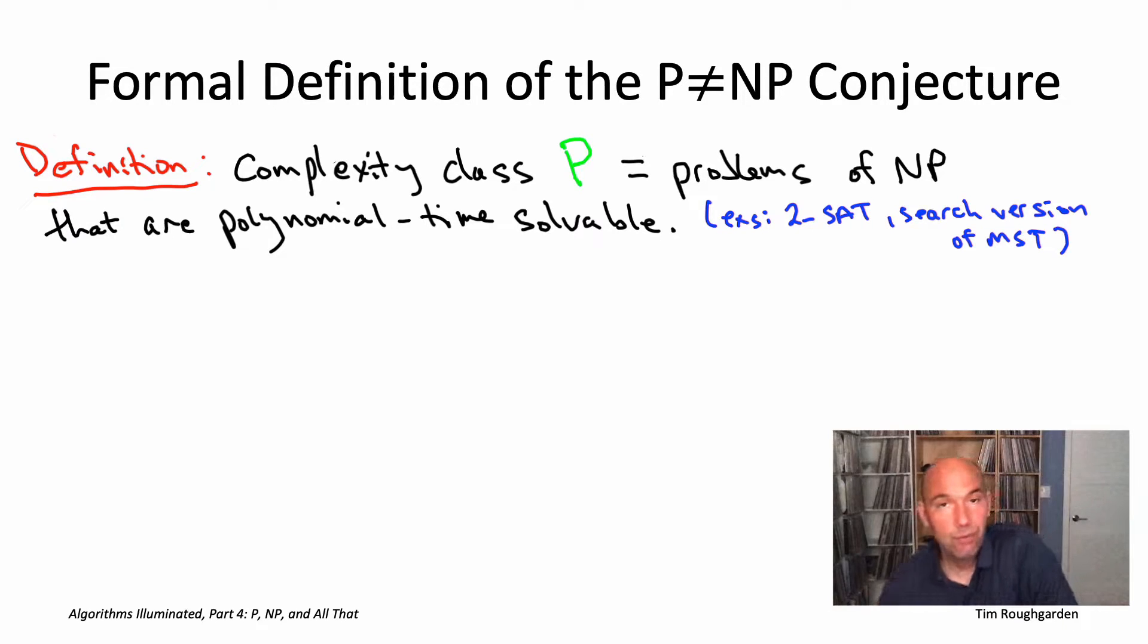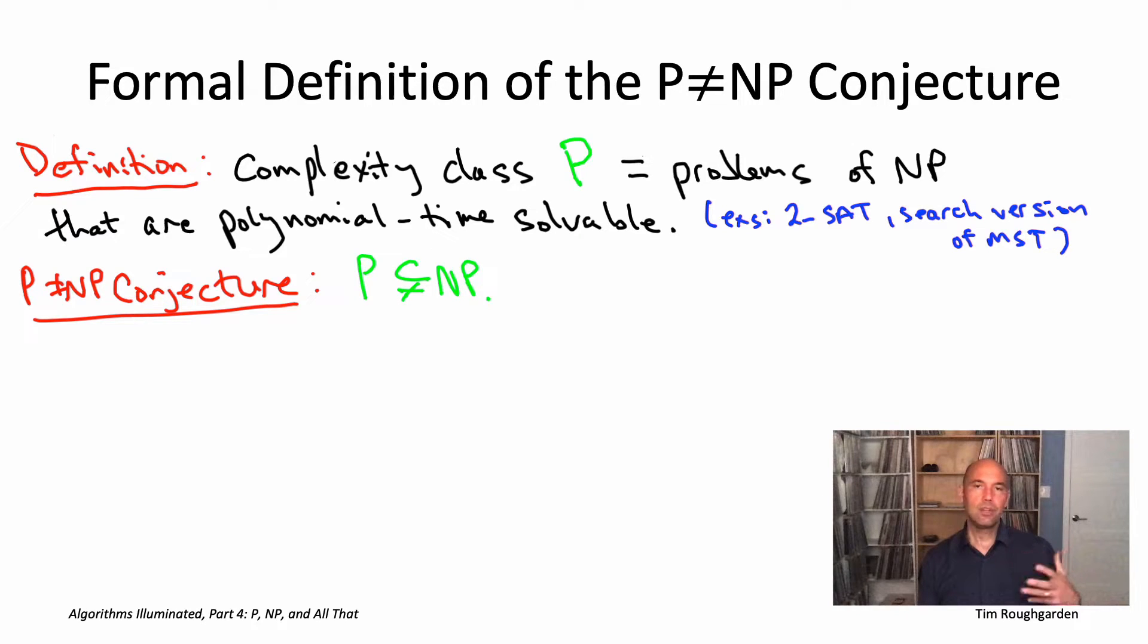Now we know what P and NP stand for. NP are the problems with efficiently recognizable solutions, P are the problems of NP that can be solved in polynomial time. The conjecture says that these two sets are different, that P and NP are not the same. By definition, every problem in P also belongs to NP, so P is a subset of NP. The conjecture says that subset inclusion is strict - there's at least one problem with efficiently recognizable solutions that is not polynomially time solvable.